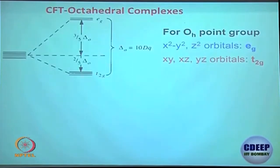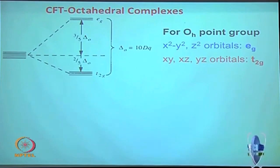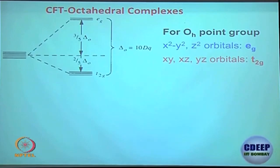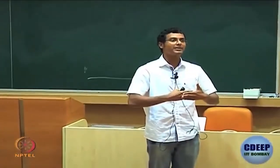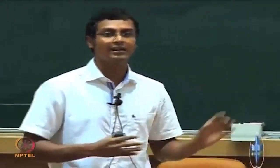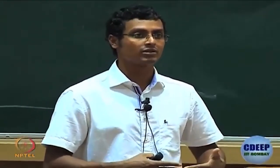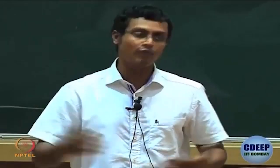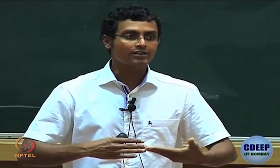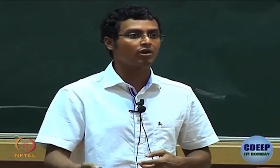Since there are 3 T₂g and 2 E_g orbitals, the stabilization for T₂g is 0.4 Δ₀ and destabilization for E_g is 0.6 Δ₀. Here we are dealing with the idealized case: ML₆ where all 6 ligands are the same. We are not yet considering mixed ligand cases such as 3 chloride and 3 fluoride.